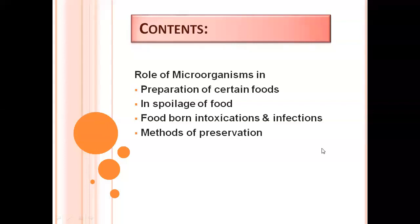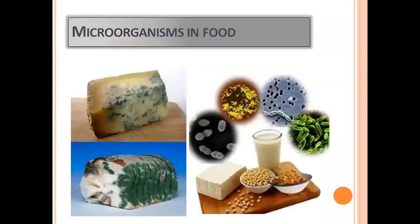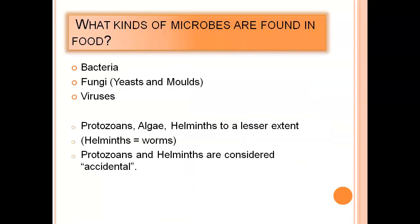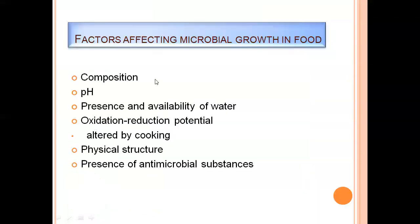The next point is the significance of microorganisms present in food material. These microorganisms play a very important role in spoilage as well as in fermentation. Different types of microorganisms can be found in food material, including bacteria, fungi (that is yeasts and molds), viruses, protozoans, algae, and helminths. Protozoans and helminths are considered accidental food contaminants.